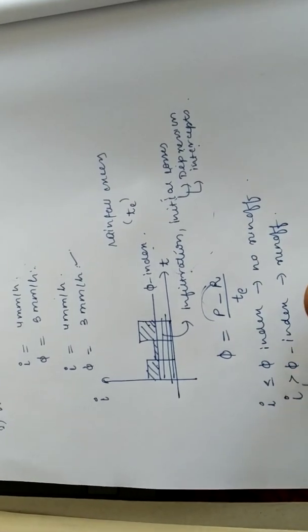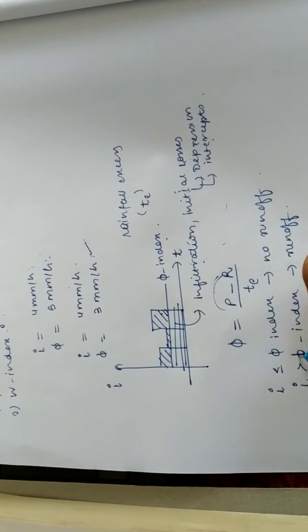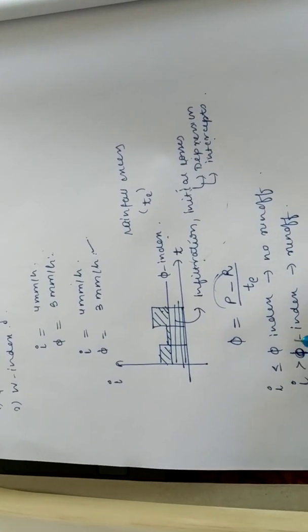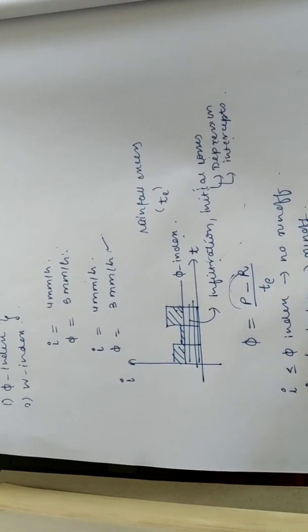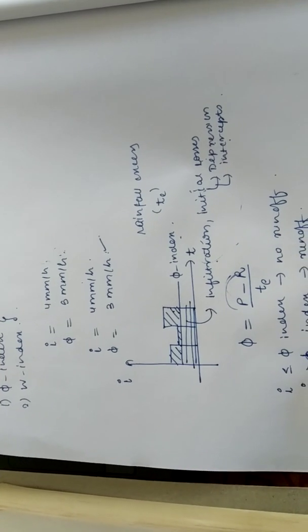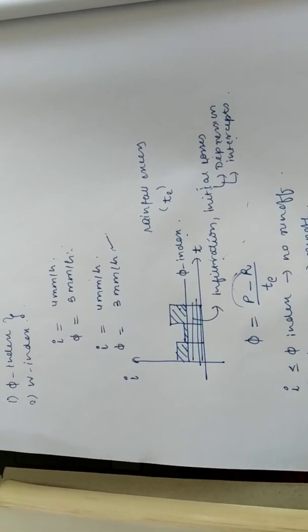It is easy to understand that phi index represents that condition or that threshold up to which losses will be there. After these losses are overcome from this rainfall only then we will get runoff.